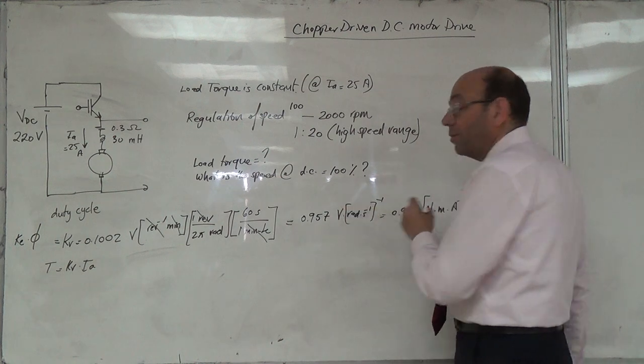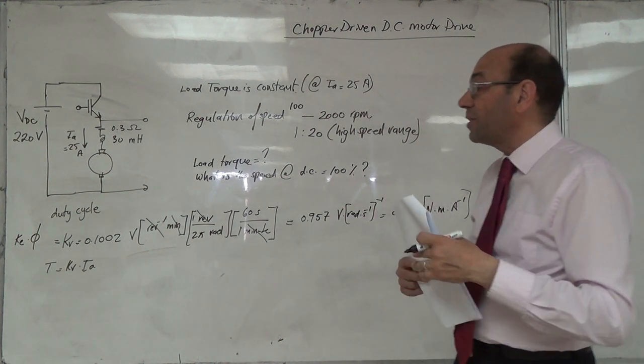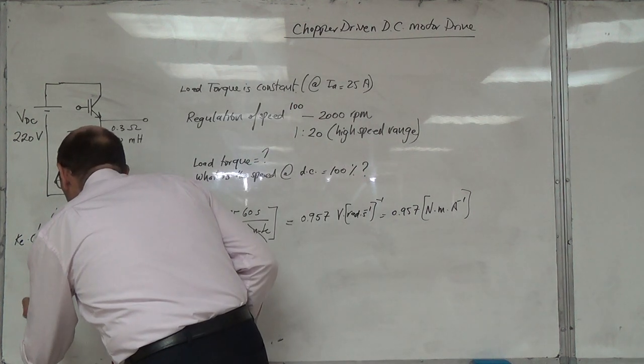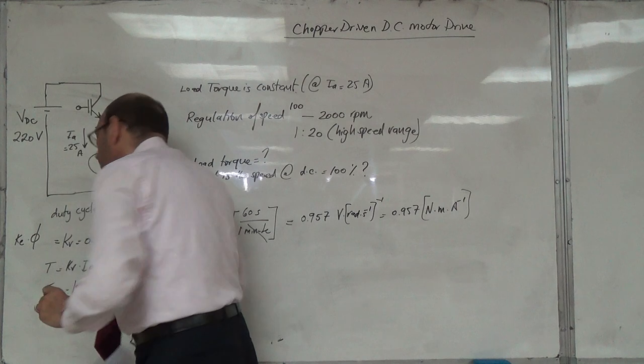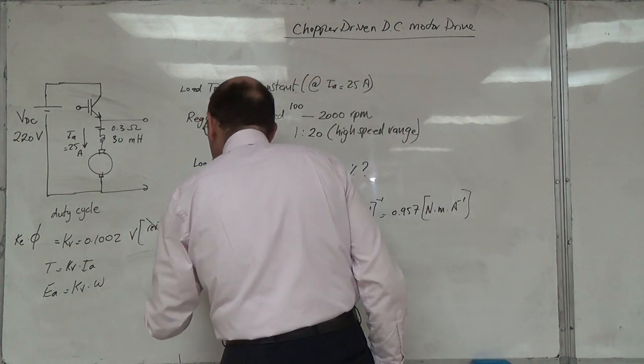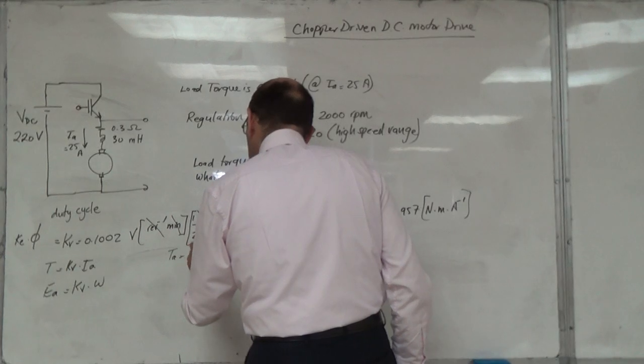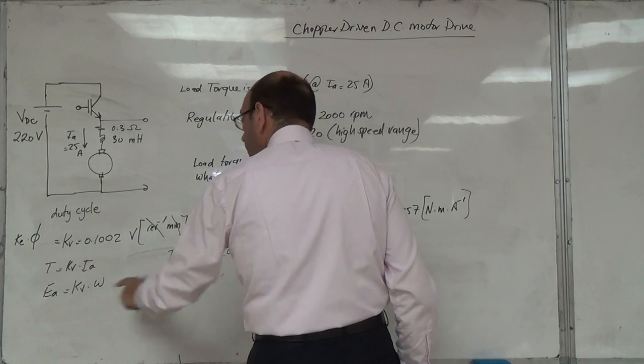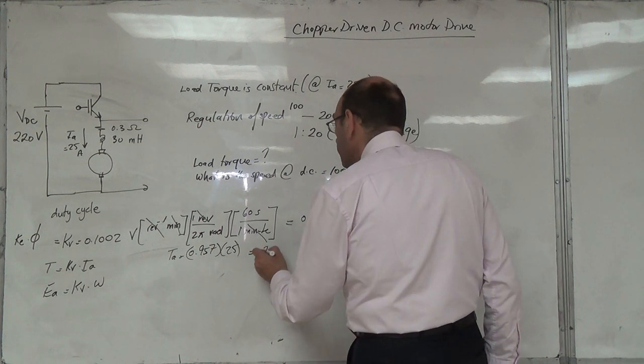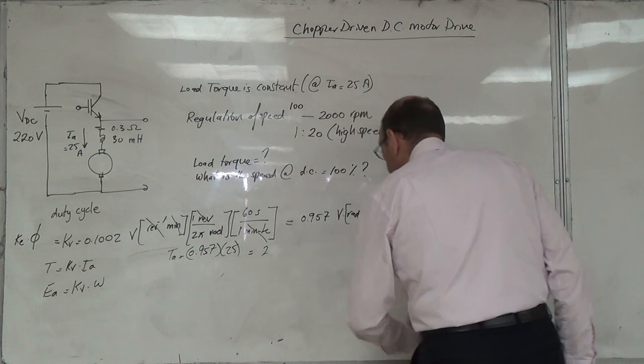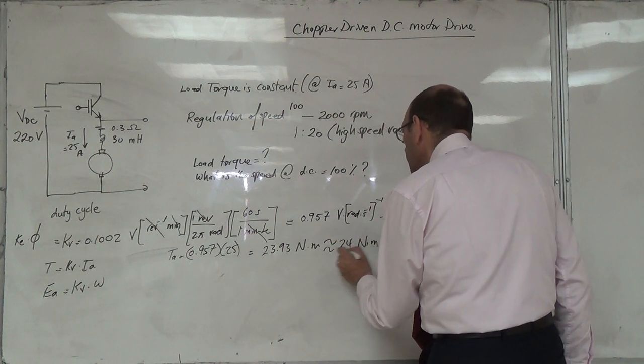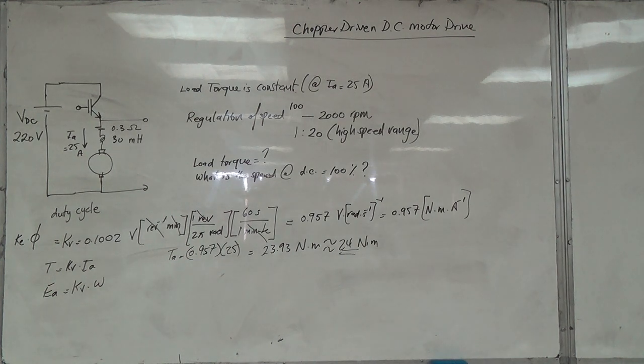So we converted to radians per second so I can multiply by omega in radians. So how much torque do I get at this current? The torque equals 0.957 times 25 ampere, which gives newton meter. 25 times 0.957 equals 23.93 newton meter. So this is the first answer - we found the torque that this motor gives.